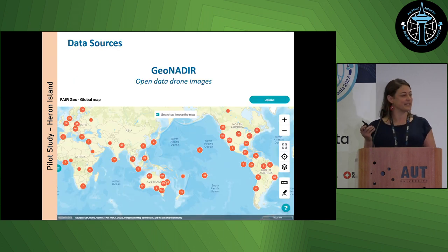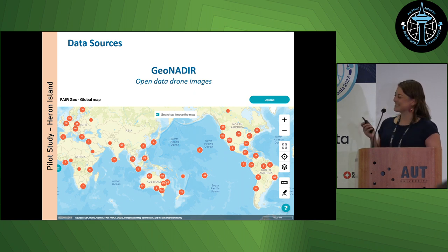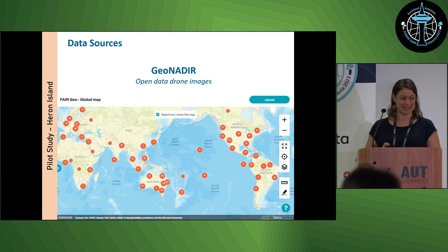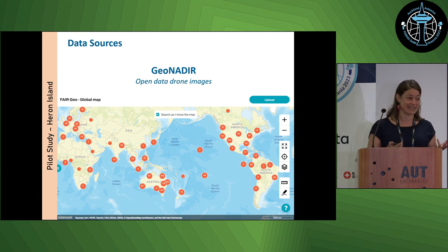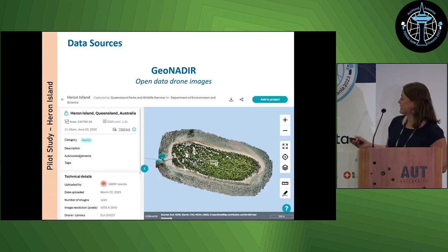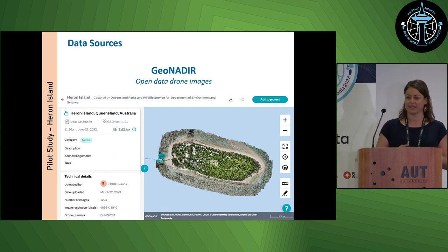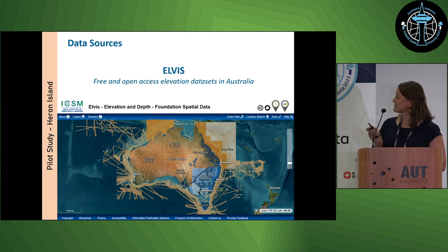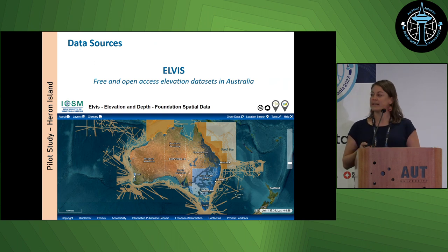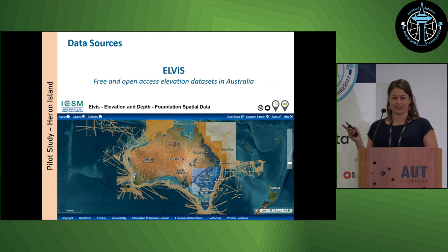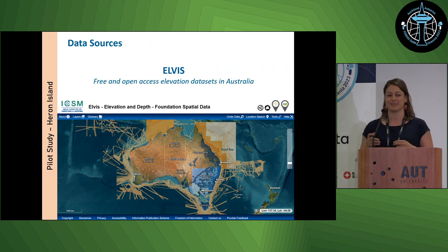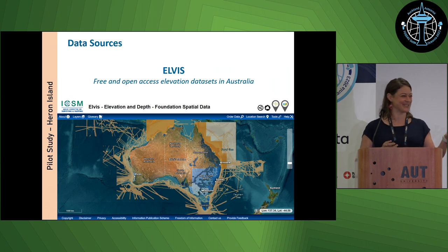Is anybody familiar with GeoNadir? GeoNadir is a platform that offers open data drone images, and I found images for Heron Island on that platform. They're getting more and more data, so if anybody is interested in drone images, you should check out this site — you can also download the original drone images and do your own models. Another data source is ELVIS, a free and open access elevation dataset for Australia, where I also found data for Heron Island. With Australia there's a lot of open data, but they only release it after three years — if you want anything newer, you have to pay.